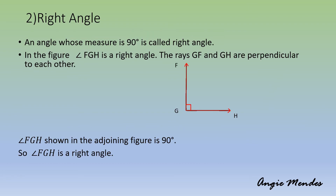A right angle: an angle whose measure is 90 degrees is called a right angle. In the given figure, angle FGH is a right angle. The rays GF and GH are perpendicular to each other. Therefore this angle is of measure 90 degrees.